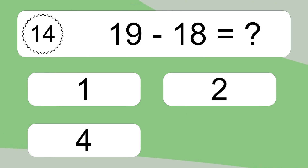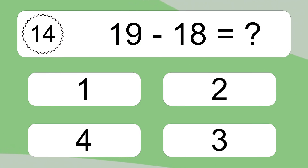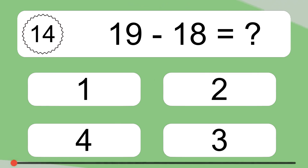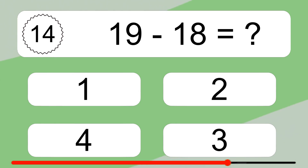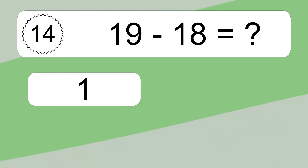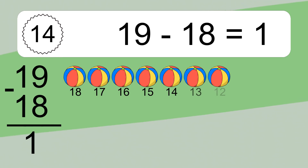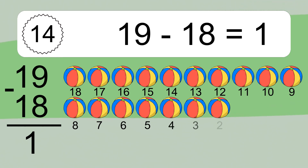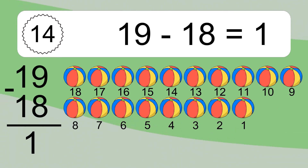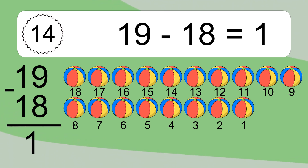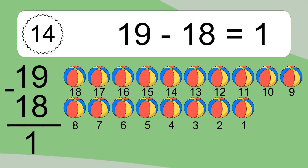19 minus 18 equals what? 19 minus 18 equals 1. Let's count it: 18, 17, 16, 15, 14, 13, 12, 11, 10, 9, 8, 7, 6, 5, 4, 3, 2, 1.